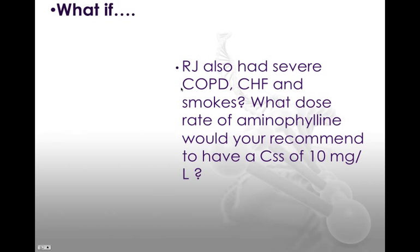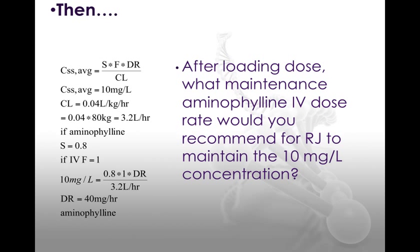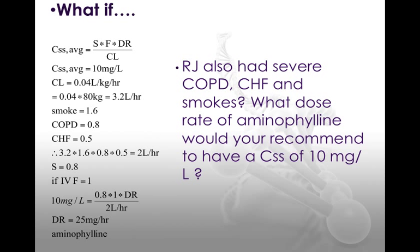What if RJ also had severe COPD, CHF, and smokes? What dose rate of aminophylline would you recommend to get a CSS average of 10 mg/L? We take the clearance of 3.2 L/hr and multiply by 1.6 for smoking, 0.8 for COPD, and 0.5 for CHF. That gives an adjusted clearance of 2.05 liters per hour, approximately 2 L/hr. Accounting for the aminophylline salt form and IV administration, we now give only 25 milligrams per hour versus the 40 mg/hr in the previous case.